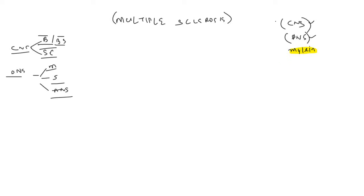So we have the CNS — brain, brain stem, and spinal cord — and we have the PNS. Both the CNS and PNS neurons have myelin, which makes impulse conduction very fast. As far as the peripheral nervous system is considered, we have motor neurons, sensory neurons, the autonomic nervous system, and also the cranial nerves, which are also a part of the peripheral nervous system.